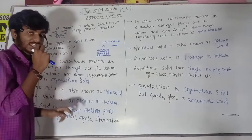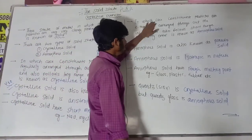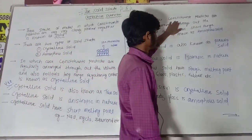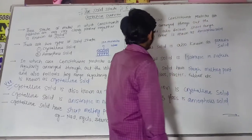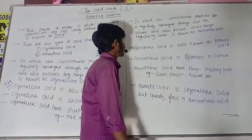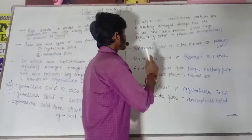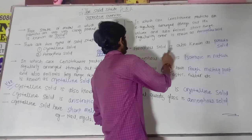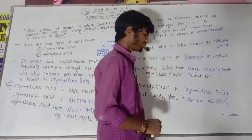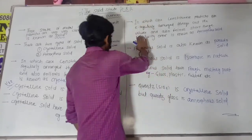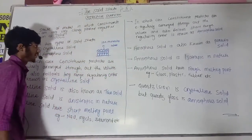Next is amorphous solid. In this case, constituent particles are irregularly arranged throughout the volume, and it does not follow long range regularity order. This is known as amorphous solid. Amorphous solid is the opposite of crystalline solid.